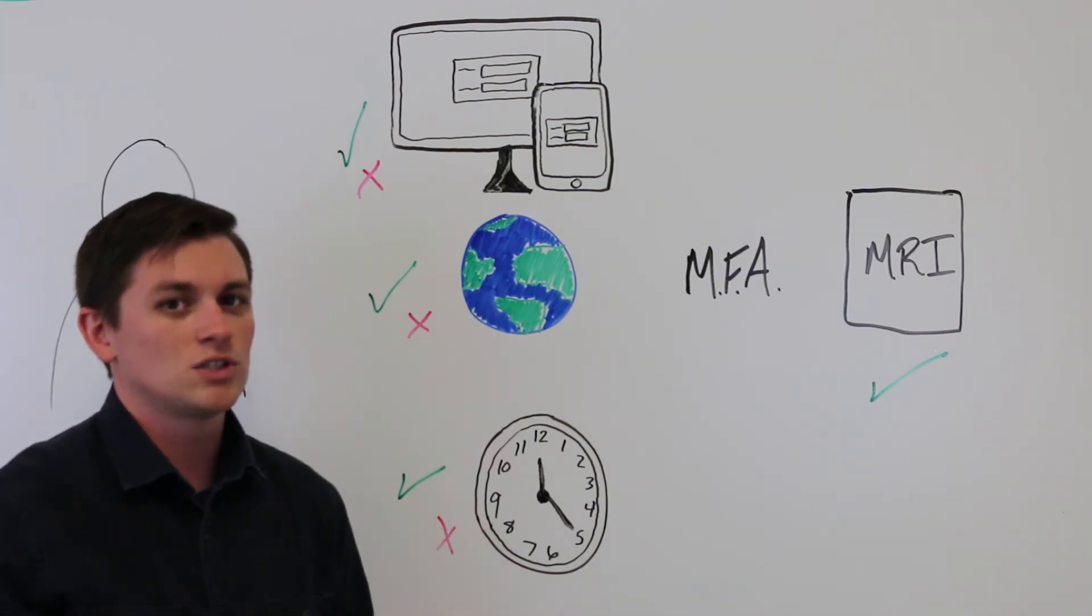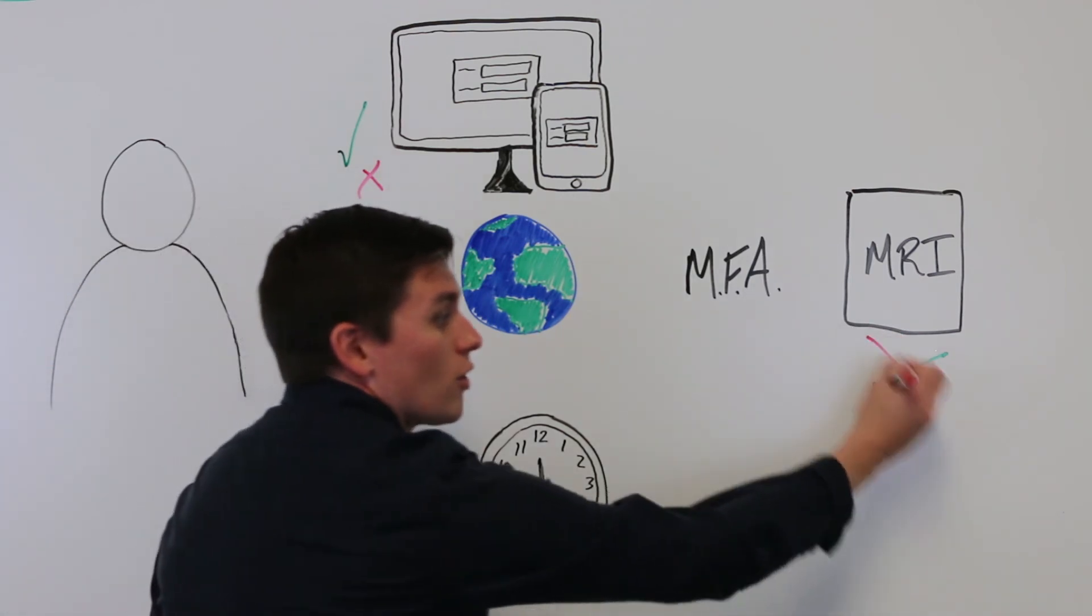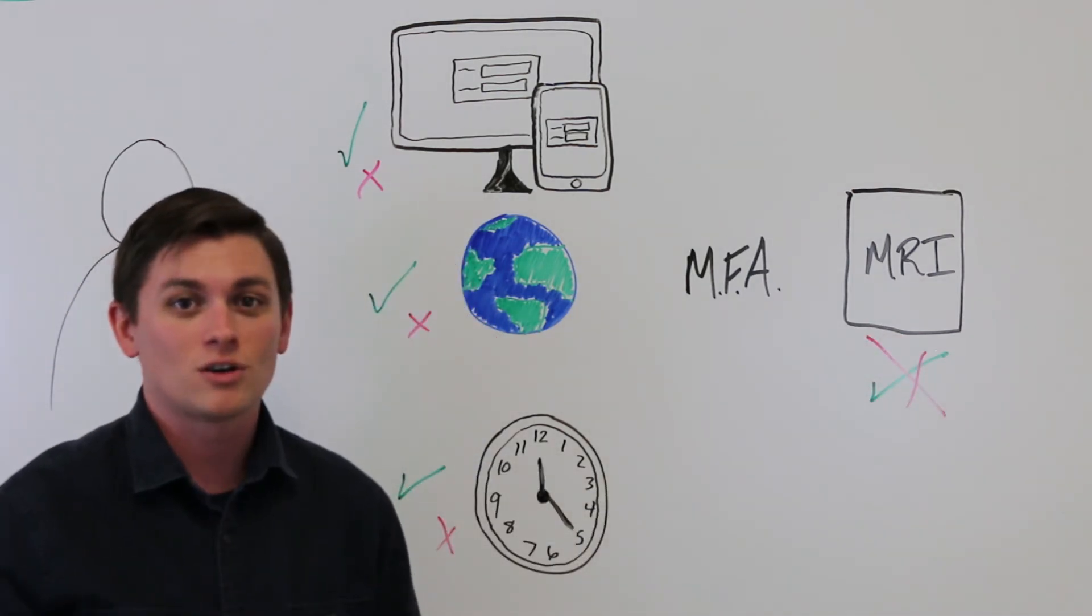Since the SSO system recognizes that there's a good chance that this isn't Jane, she's going to be prompted with the MFA questions that we listed before. This restricts that person from using the application. They're no longer allowed to log into it with Jane's credentials.